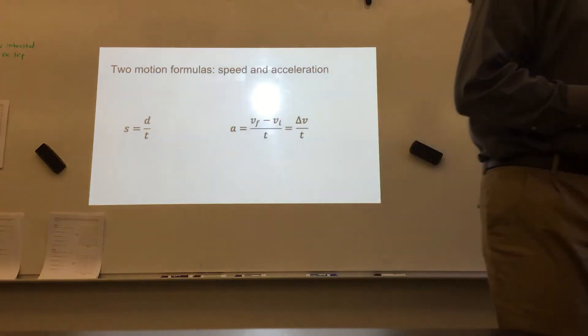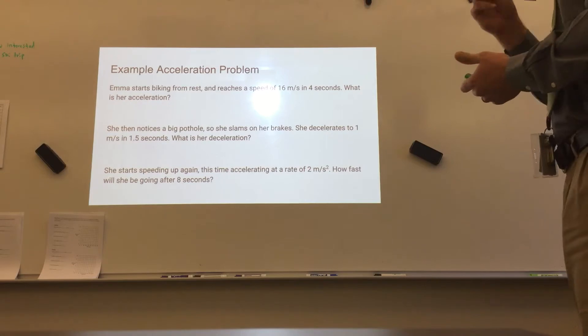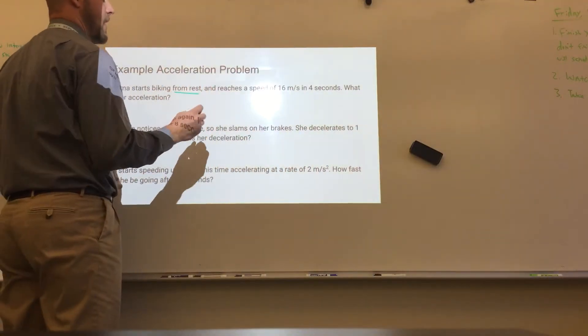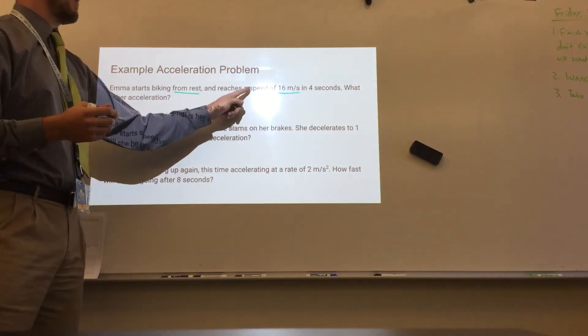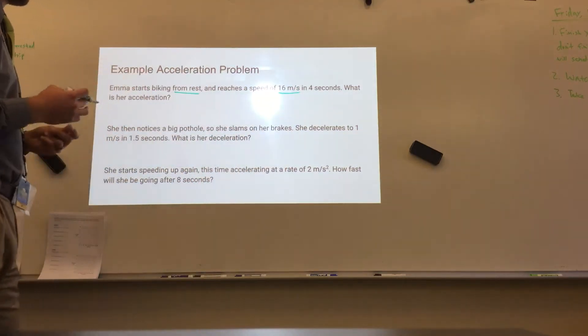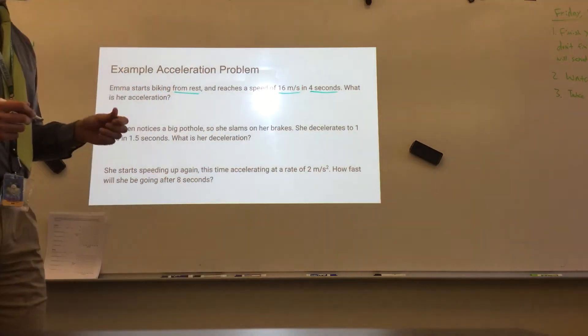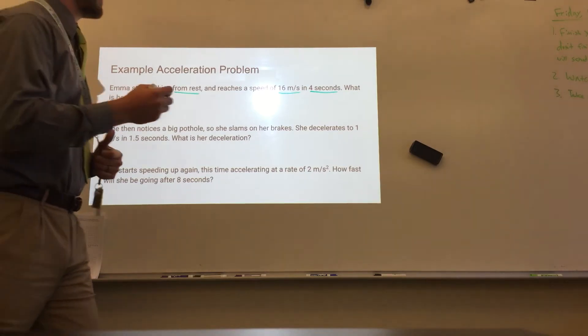So the first one will be rather straightforward. Emma starts biking from rest and she reaches a speed of 16 meters per second. I could have also said velocity, they're kind of interchangeable in this case, in four seconds overall. It's a good idea to identify what variables you do know in this problem.